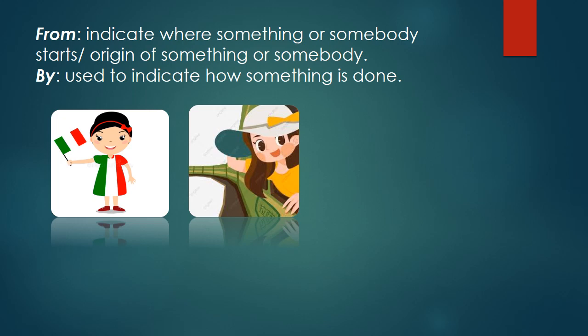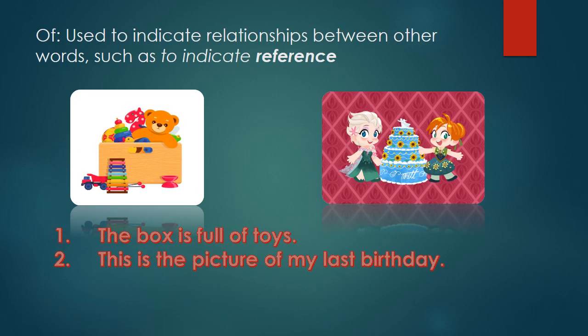Now let's start today's class. Today we cover 'of.' 'Of' usually indicates relationships between other words, such as reference. For example: 'The box is full of toys' and 'This is the picture of my last birthday' — this picture is the reference of my last birthday.